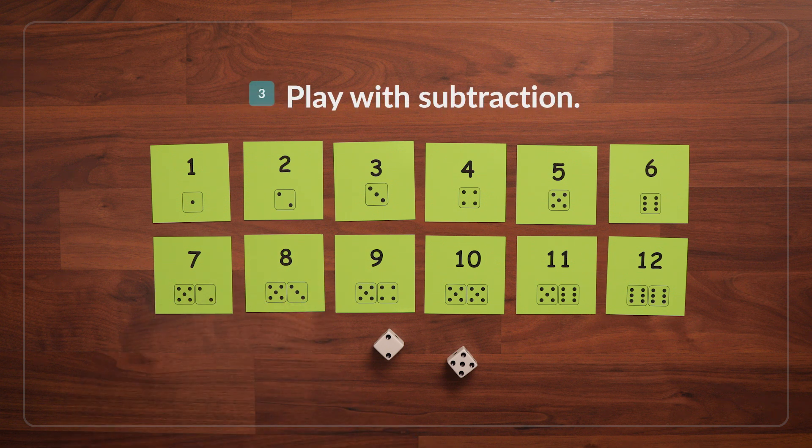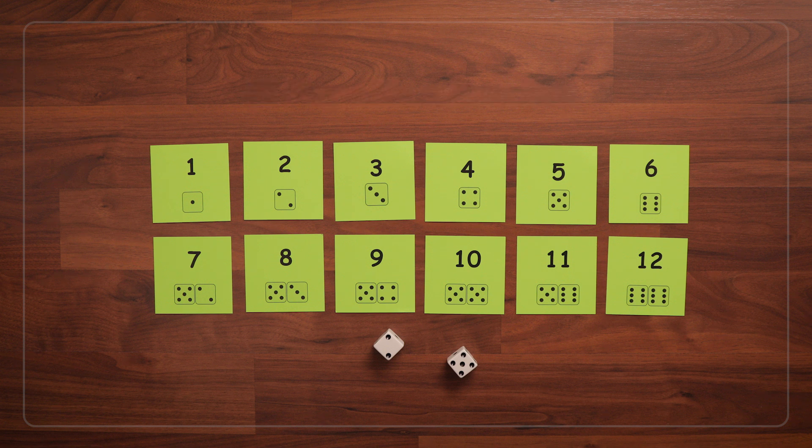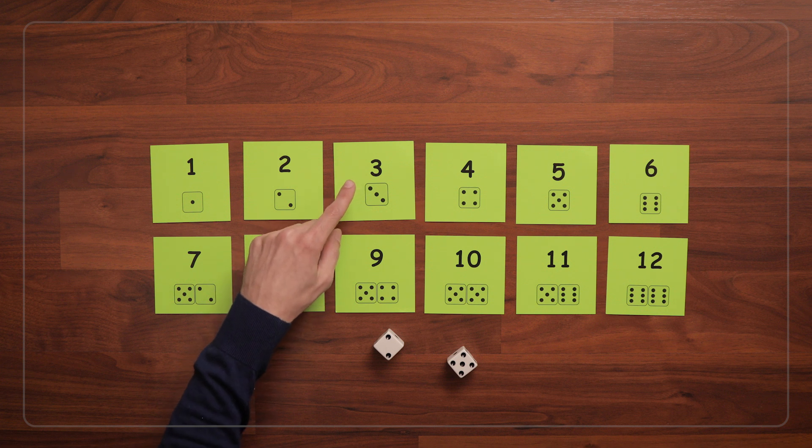If kids are ready, you can start playing this game with subtraction. So in the case of my 2 and 5, I could subtract 2 from 5 and turn over my 3 card.